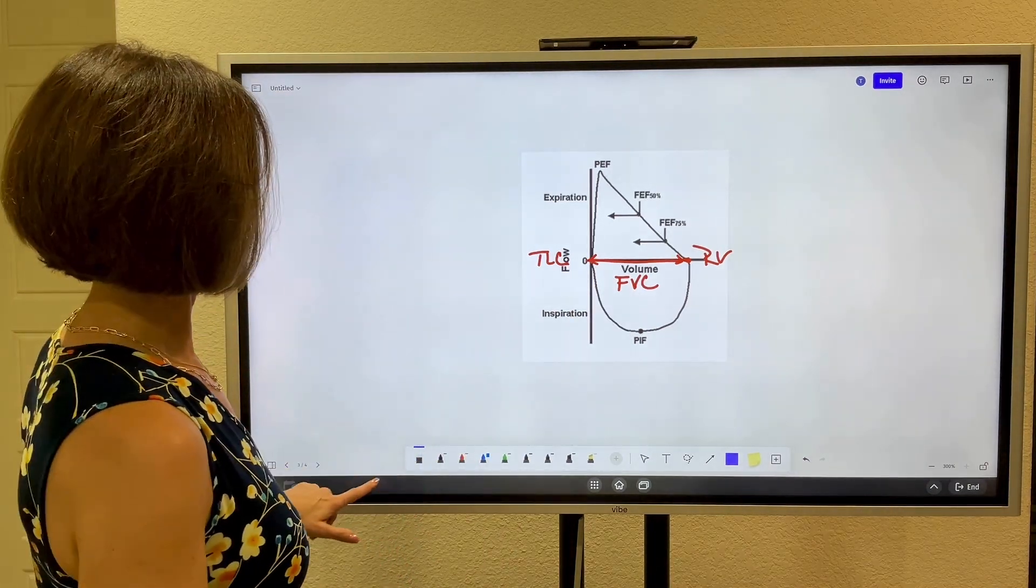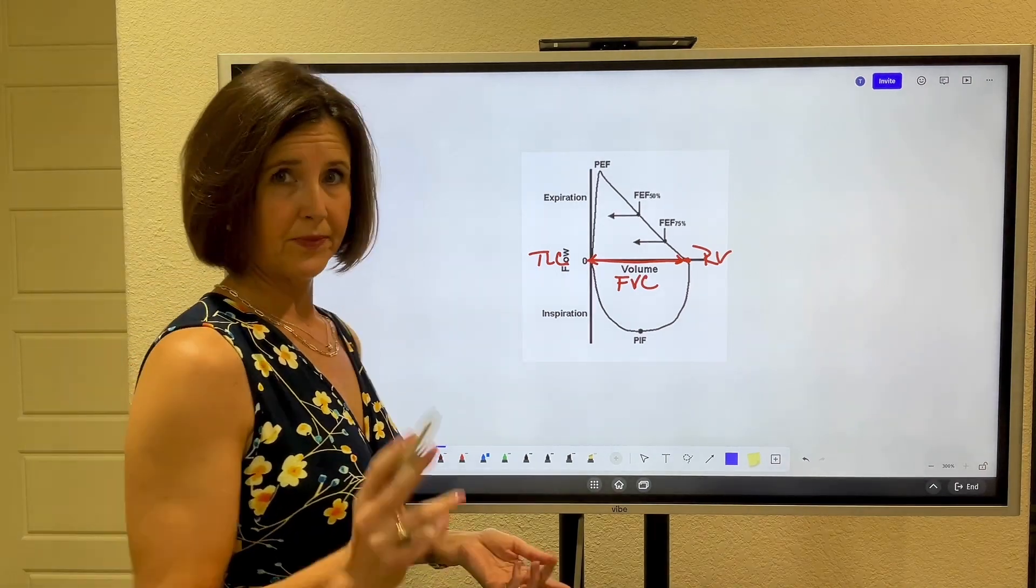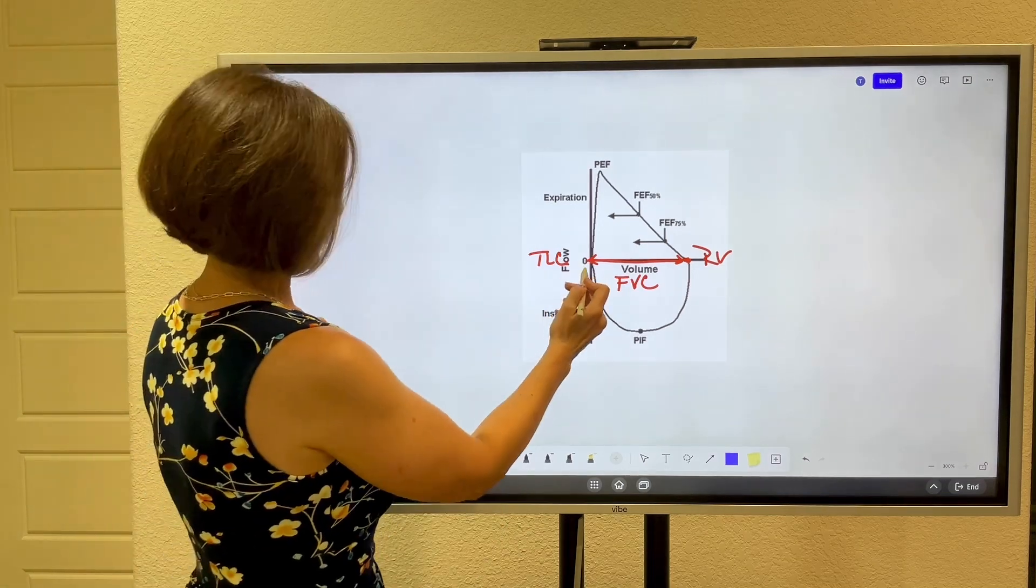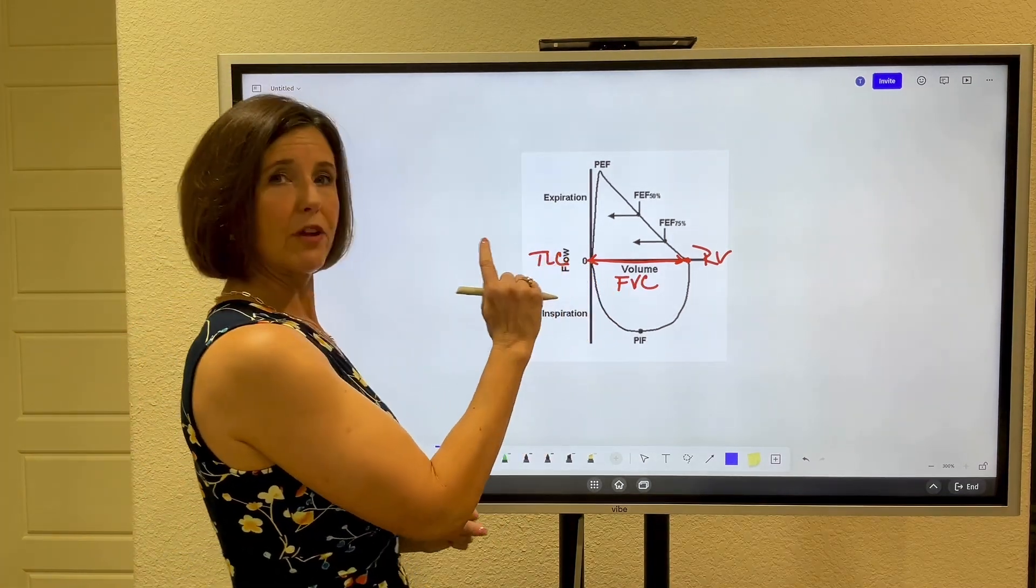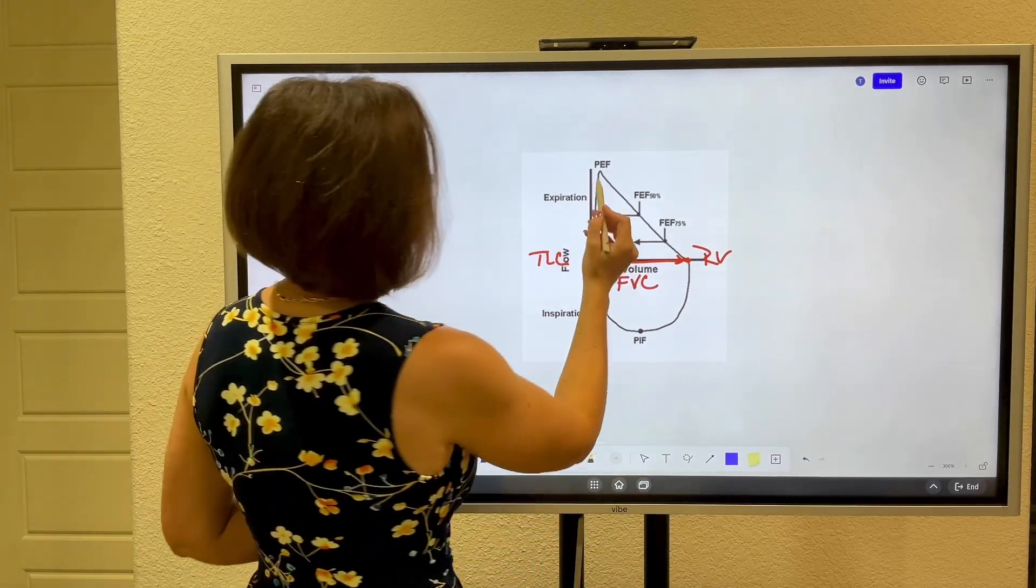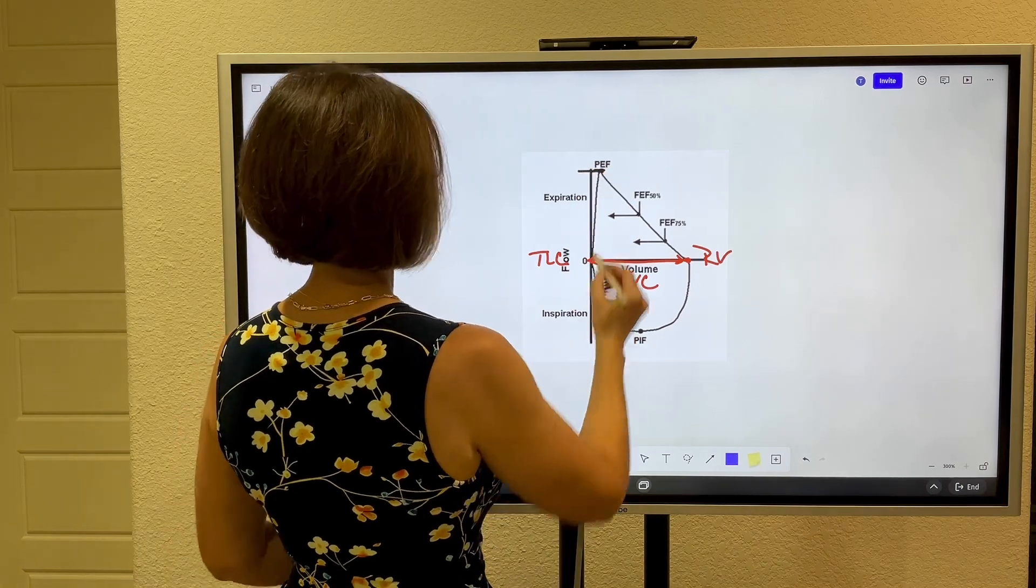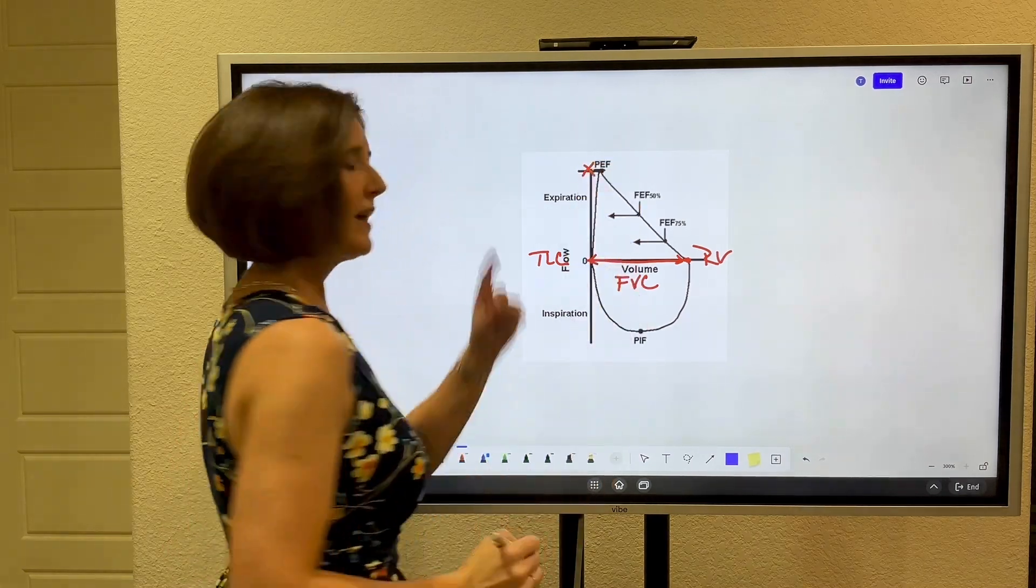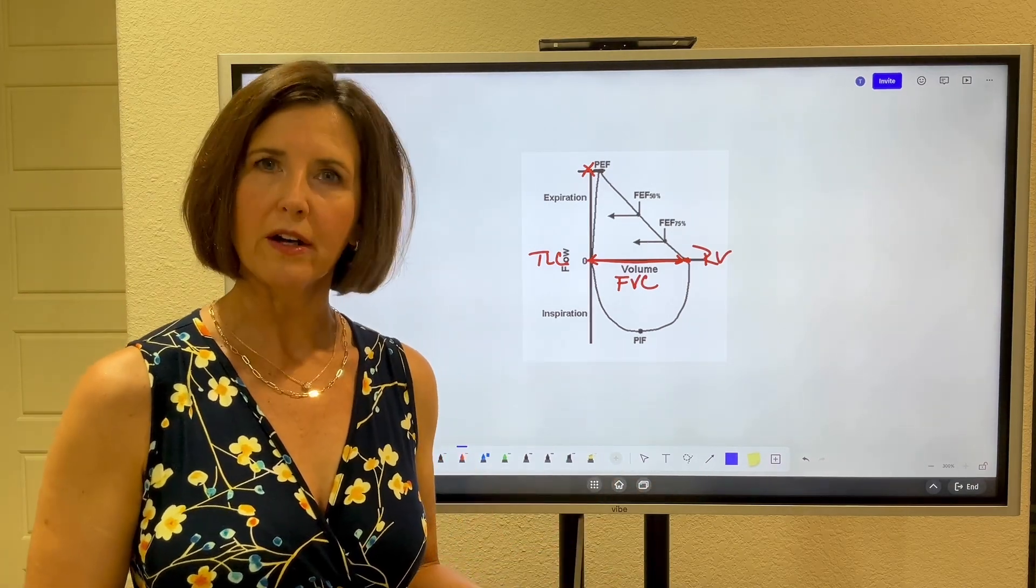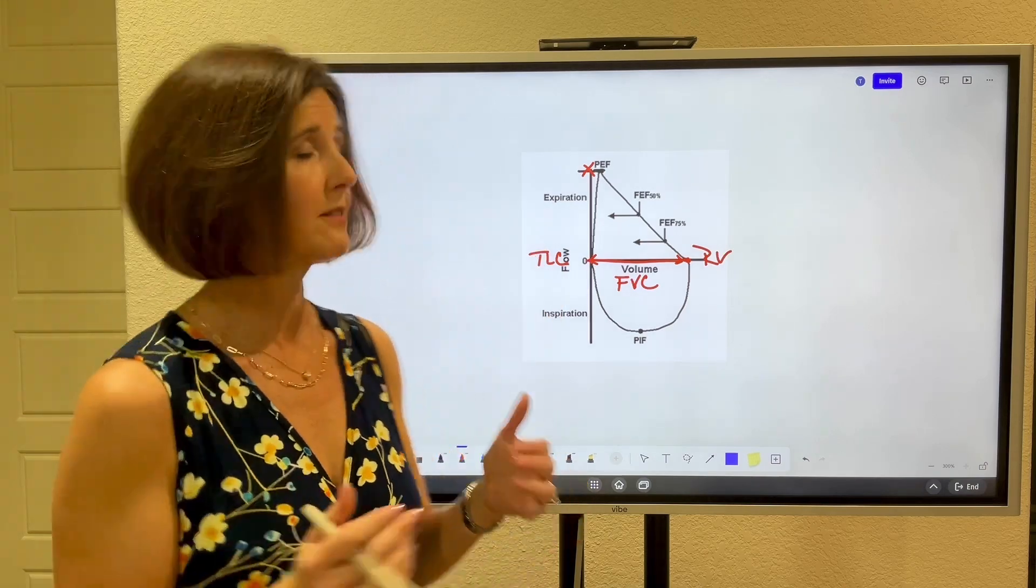Now let's go back and let's talk about flows. Let that patient take a great big huge deep breath in. We start at TLC and then we're going to have them blow as hard as they can. Blast it out of our chest. This first flow that is measured right up here and we come over and measure it on the graph right here. That is the peak expiratory flow or peak expiratory flow rate PEFR. That tells us about flows coming immediately out of the really large airways.